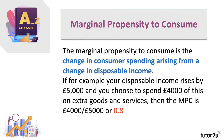For example, if your disposable income rises by five thousand pounds and you choose to spend four thousand of this on additional goods and services, then the MPC is four thousand over five thousand, or 0.8. The reverse effect is that you are saving 20 percent of any gain in income while spending 80 percent.